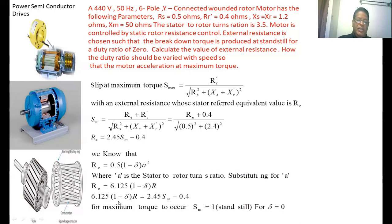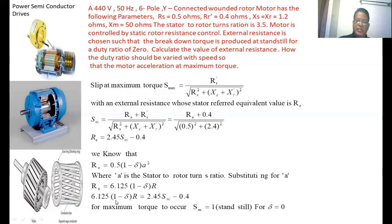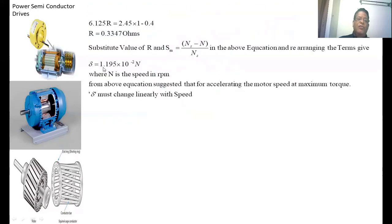Setting 6.125 times (1 minus delta) times R equal to 2.45 times (1 minus s_m): the maximum torque is at starting, so the slip at maximum torque becomes 1, and delta equals 0 as given. Substituting these values: 6.125R equals 2.45 times (1 minus 0.4), so R equals 0.3347 ohms. Now substituting the values of R and s_m using s_m equals (N_s minus N) divided by N_s, the final expression obtained is: delta equals 1.195 times s_m minus 0.5. This is the expression for the duty cycle during acceleration of the induction motor, suggesting that to accelerate the motor at maximum torque, delta must change linearly with speed.